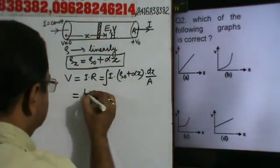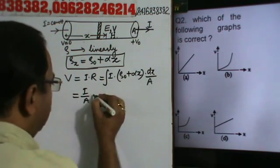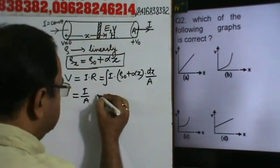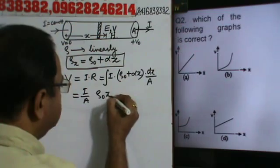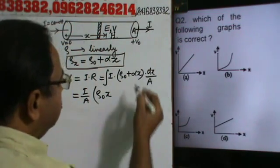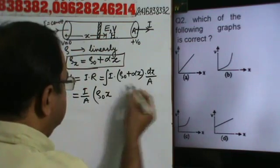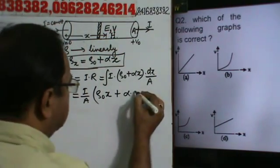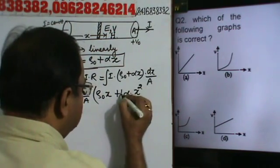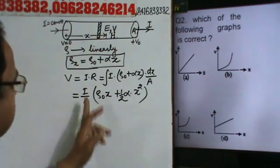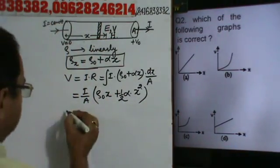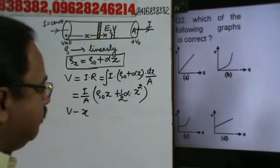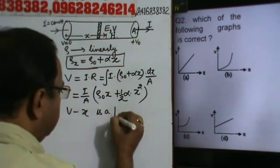Integrating, V = (I/A) · integral of (rho_naught + alpha·x) dx = (I/A) · [rho_naught·x + alpha·x²/2]. So the V–x curve is a parabola — it is a general parabola.